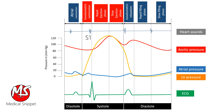The first heart sound is heard when the mitral valve closes during isovolumetric contraction, and the second heart sound is heard when the aortic valve closes during the isovolumetric relaxation phase. The third heart sound occurs during the rapid filling phase and may be physiological or pathological. The fourth heart sound is pathological and occurs during atrial contraction against a non-compliant ventricle.